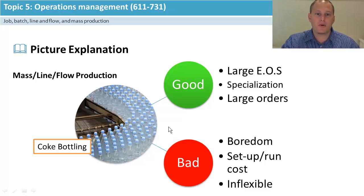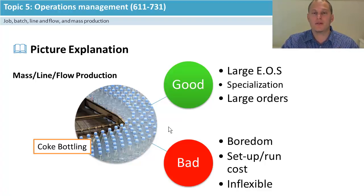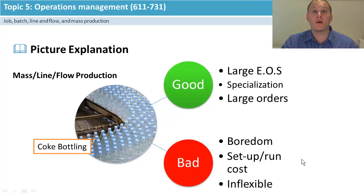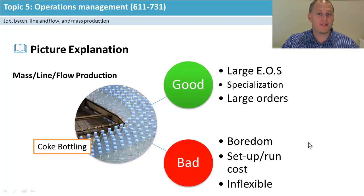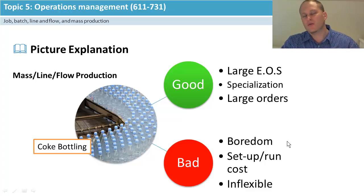For example, Coke bottles always come out at your 330 or 375 ml variants — changing that means setting the whole line up again. So if you want large orders with good specialization, you're going to have a lot of inflexibility and a lot of boredom.